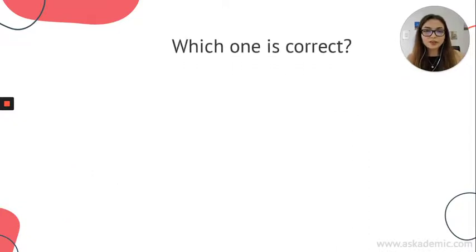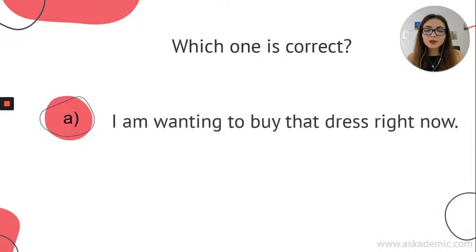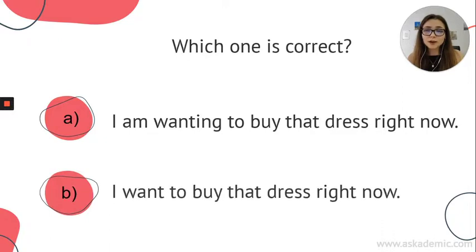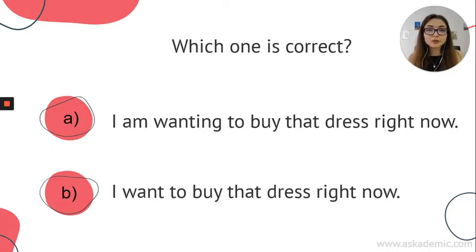Let's move on to the last question: which one is correct — 'I am wanting to buy that dress right now' or 'I want to buy that dress right now'? If you said B again — yes, you're right. 'I want to buy that dress right now.' I want it right now, but I can't use it with the present continuous form. 'Want' is one of those stative verbs — don't forget. Okay guys, I hope you enjoyed this lesson, learned new things, and I hope to see you in the next videos. Bye.